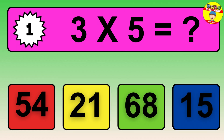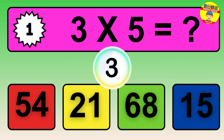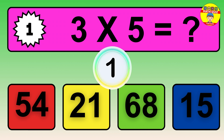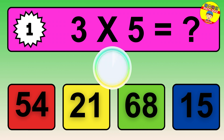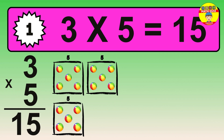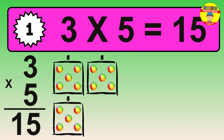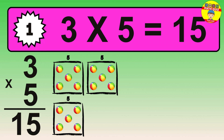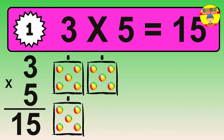Question 1. 3 times 5 equals what? The answer is 3 times 5 is 15. To calculate, we have 3 groups with 5 balls each one. So, how many balls do we have? 15 balls.